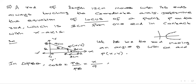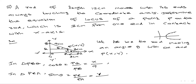So cos theta = x / 9. Now using triangle ARP: sin theta = opposite / hypotenuse = PR / PA. PR = y, PA = 3. So sin theta = y / 3.